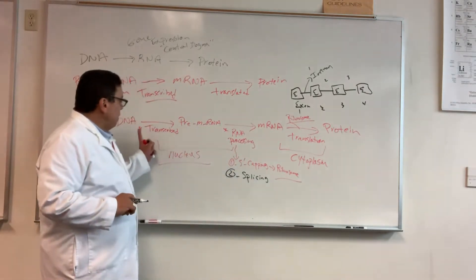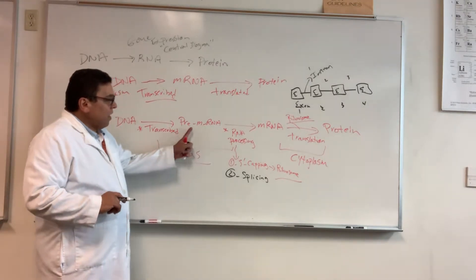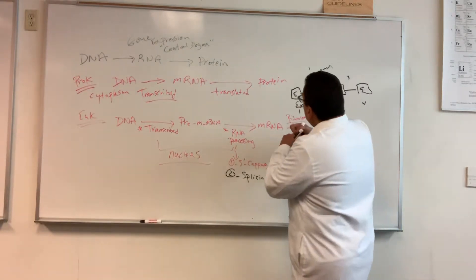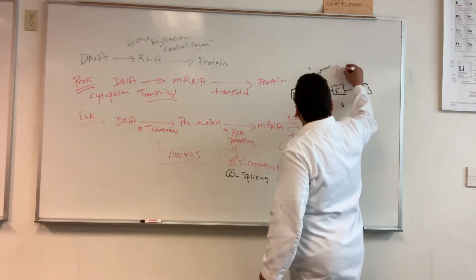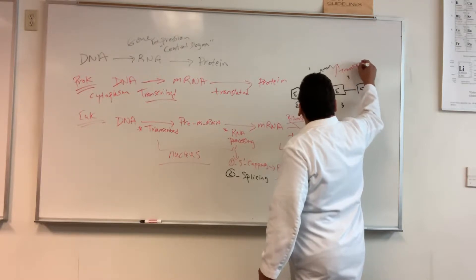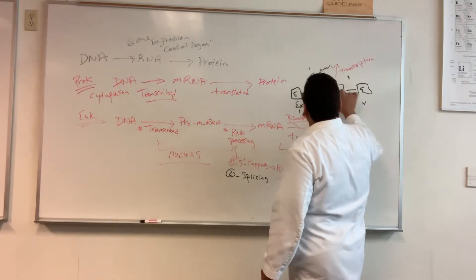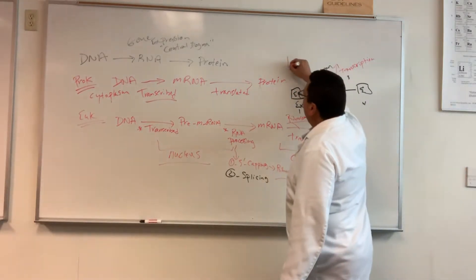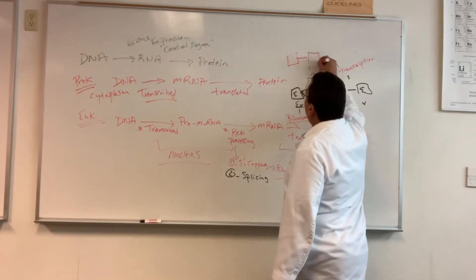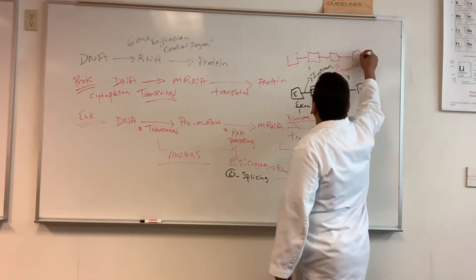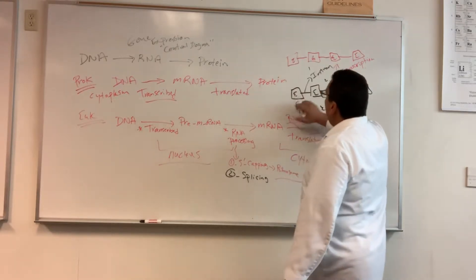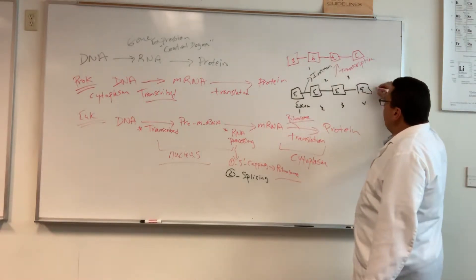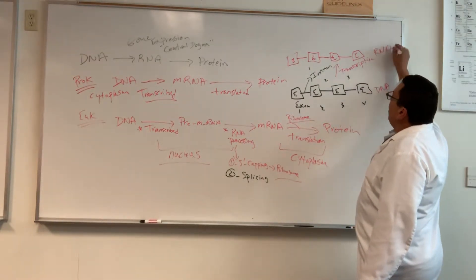When you copy the DNA, that copy is called pre-mRNA. Transcription makes an exact copy of the DNA but in RNA form — that's the only difference. If you have four exons and three introns in the DNA, the pre-mRNA also has four exons and three introns. The only distinction is one is DNA and the other is RNA.